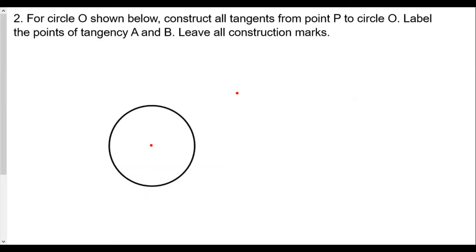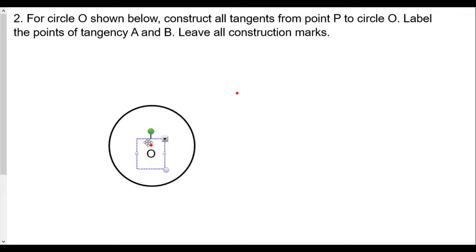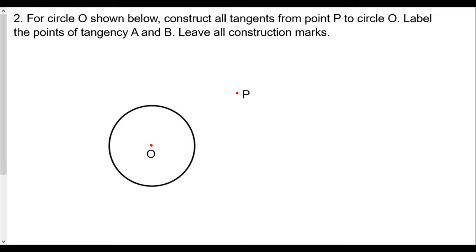For question two: for circle O shown, construct all tangents from point P to circle O, label the points of tangency A and B, and leave all construction marks. So we have point O and point P. Our very first step is to connect line segment OP.